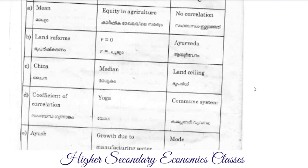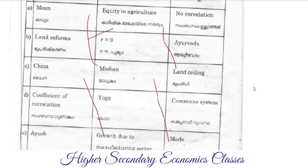Match the following answers: Mean matches with Land Reforms. Land Reforms relates to Equity in Agriculture and Land Sealing. China matches with Growth due to Manufacturing Sector and Commune System. Coefficient of Correlation with value R equal to zero matches with No Correlation. Ayush matches with Yoga, and then Ayurveda.